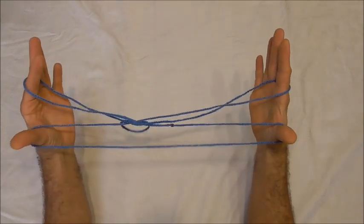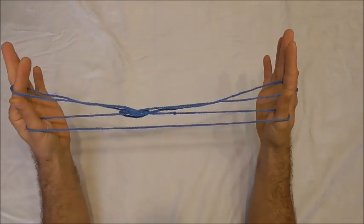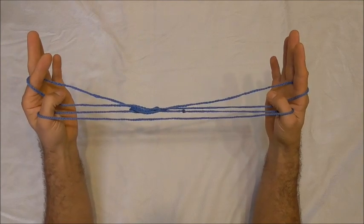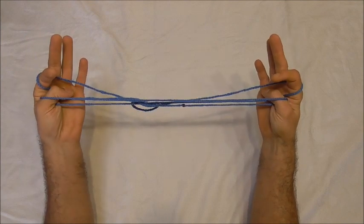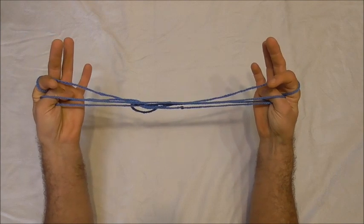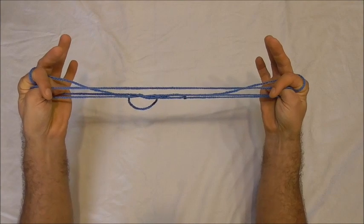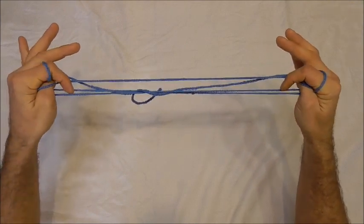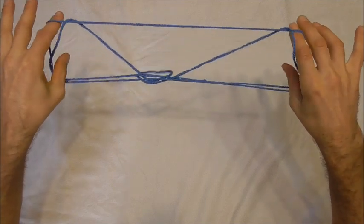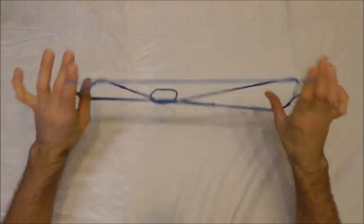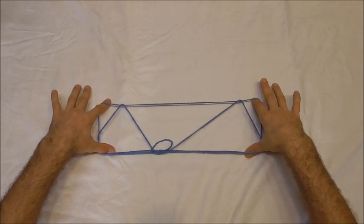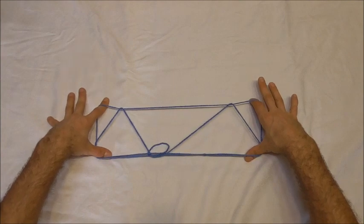And then next I want to use my thumbs to push down the near pointer finger string. I'm going to curl my pointer fingers over my thumbs and push away the near thumb string through the pointer finger loops and rotate my hands forwards and there you should have your two mountains and the sun string figure.